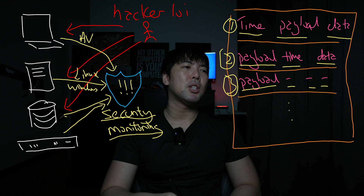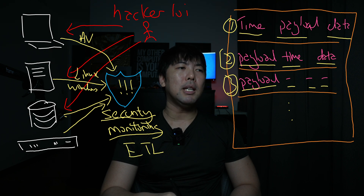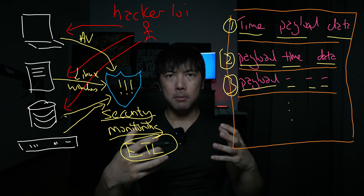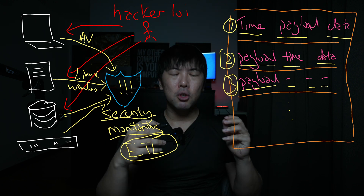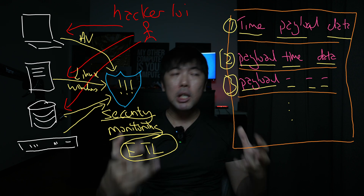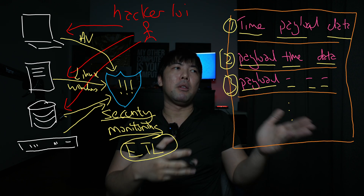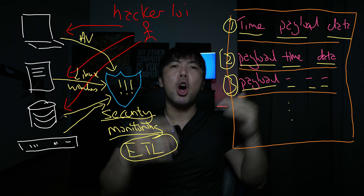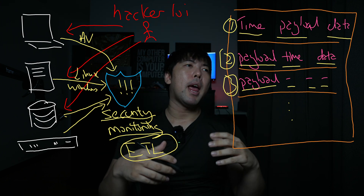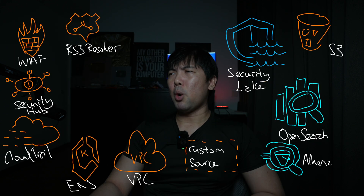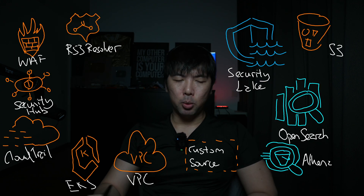That heavy lifting is what we call ETL — extract, transform, and load. You need to extract these logs, transform them into something the security monitoring system can use for correlation or machine learning, to detect suspicious IP addresses, anomalies in traffic, and apply threat intelligence against them.